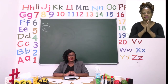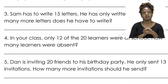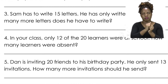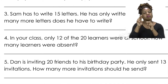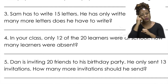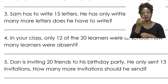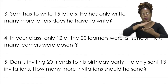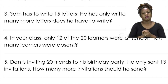Now for our last exercise for this lesson, let's turn to page 27. On page 27 we are going to be doing some problem solving. When doing problem solving, we first need to read the story to understand what it is all about, then choose the numbers we're going to use, then decide whether we're going to add or subtract, and then write a complete sentence about the answer. Number three says: Sam has to write 15 letters. He has only written seven letters. How many more letters does he have to write?